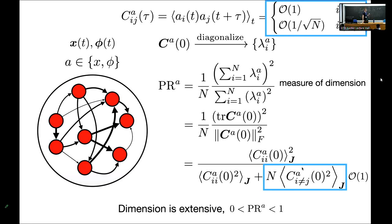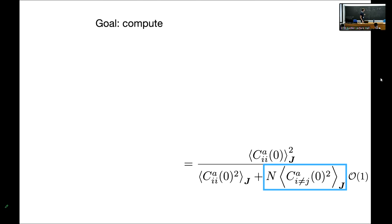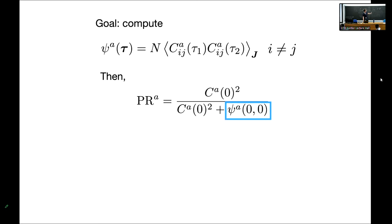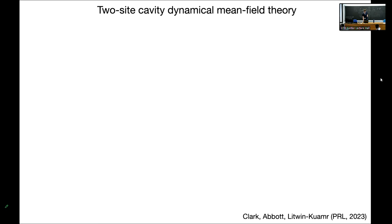To compute this, I want to compute an order parameter: the mean square cross-covariance with different time lags for the two copies, which will be useful. Once computed, I can express the dimension in terms of this. This can be computed using a version of the cavity method from statistical physics, specifically a two-site dynamical version. Two sites because I care about correlations between distinct pairs of units.